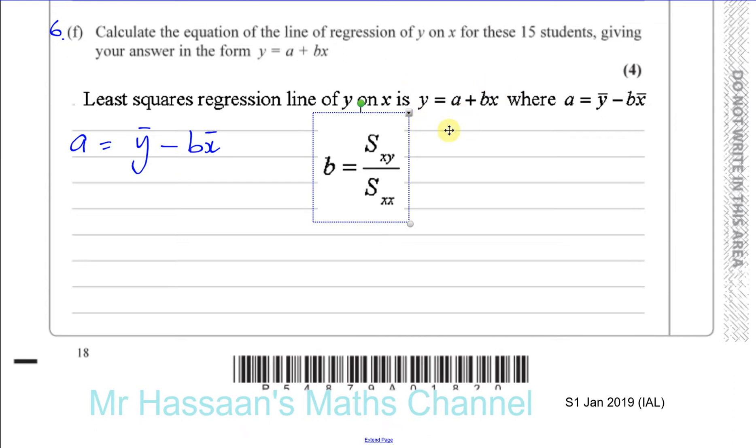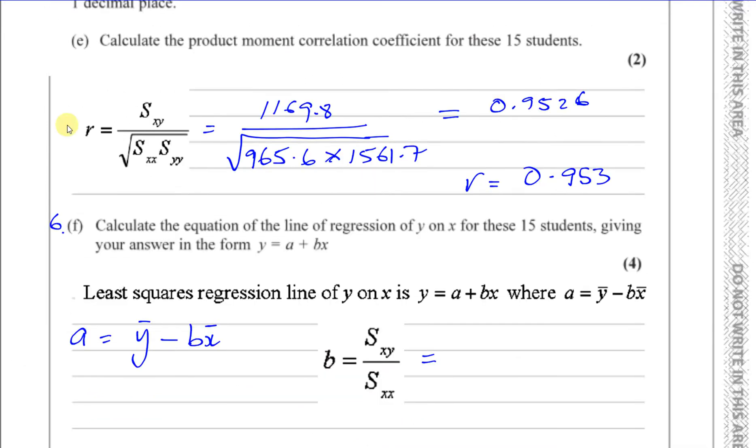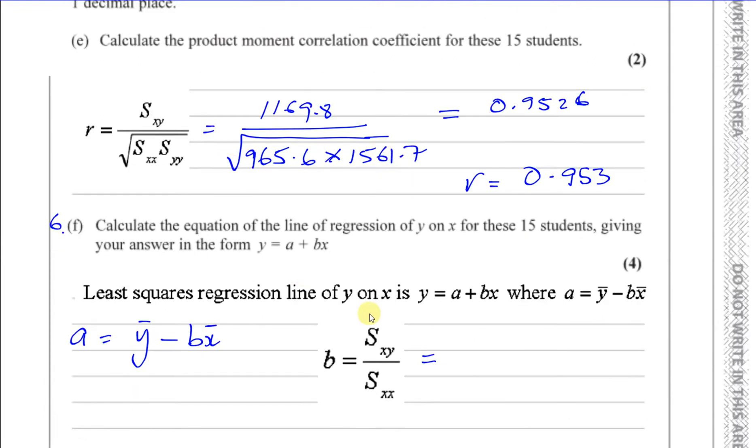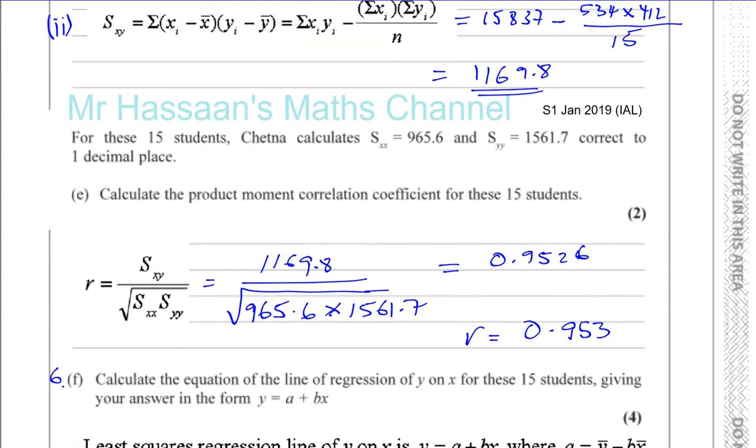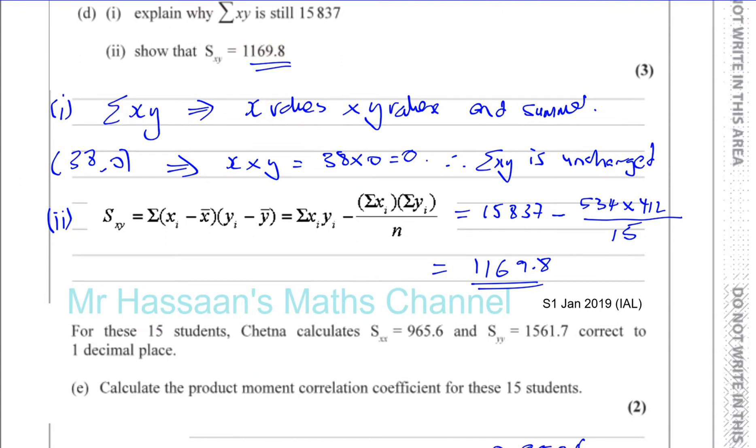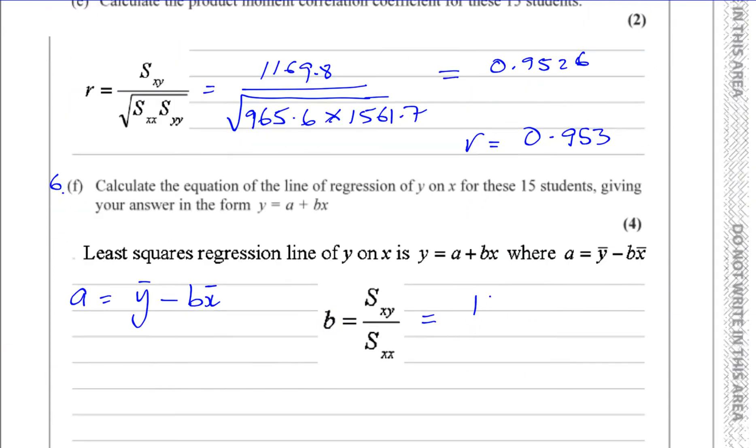Basically these values are what we found earlier in the question. They told us these values here, if you can see. They've told you that Sxy, which we had to show earlier, is 1169.8. And we've got to divide that by Sxx, which is 965.6. Divided by 965.6. And that tells us the value of b.